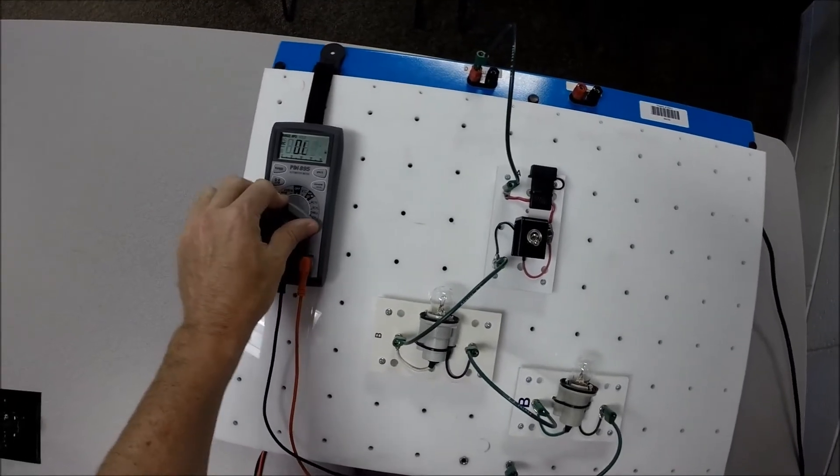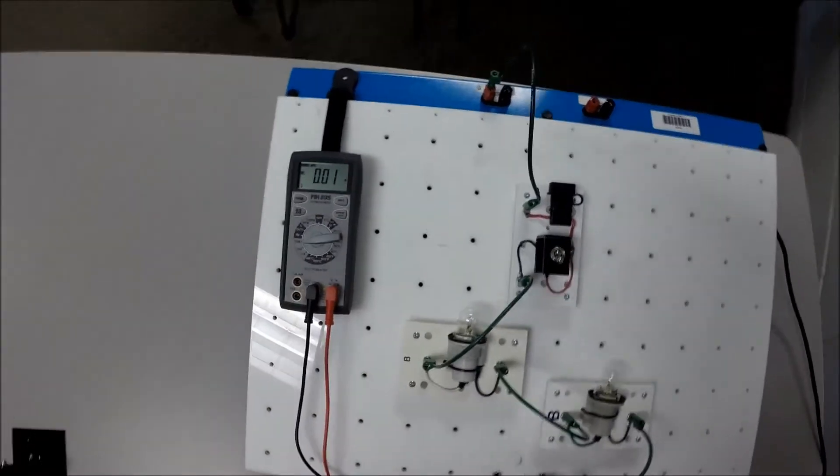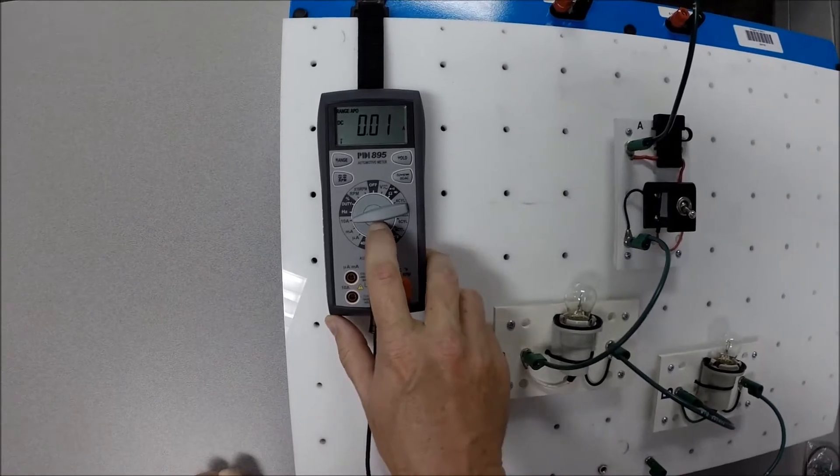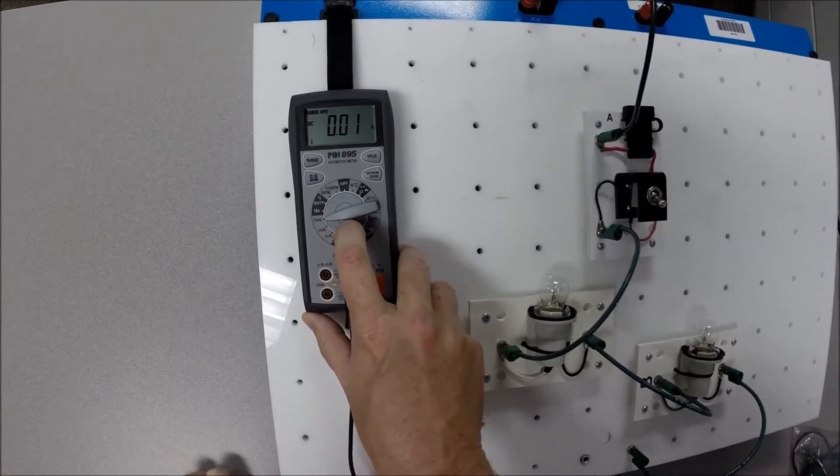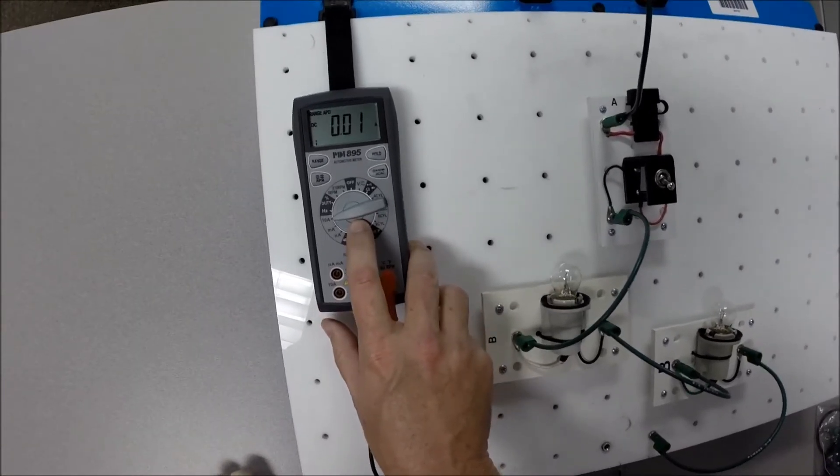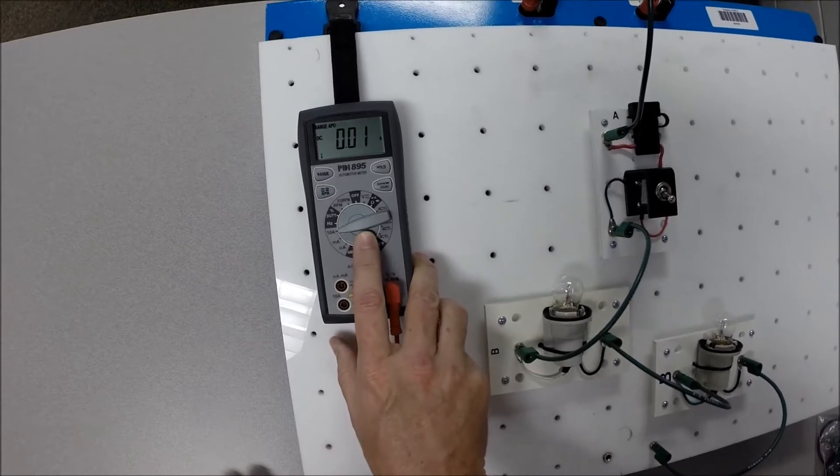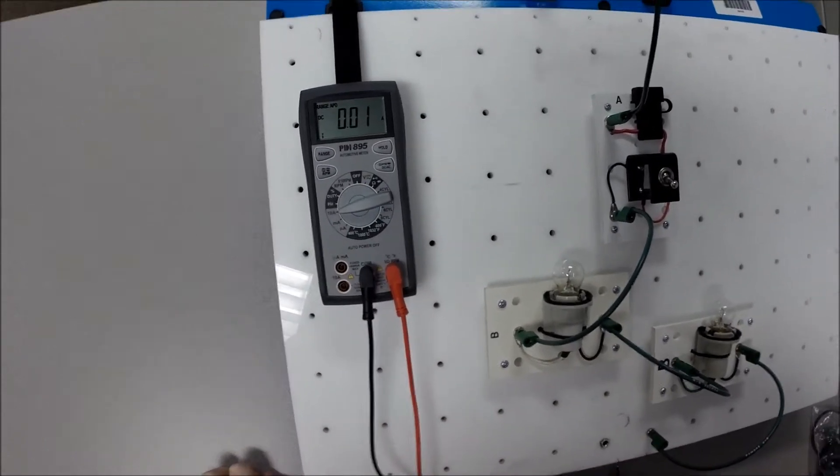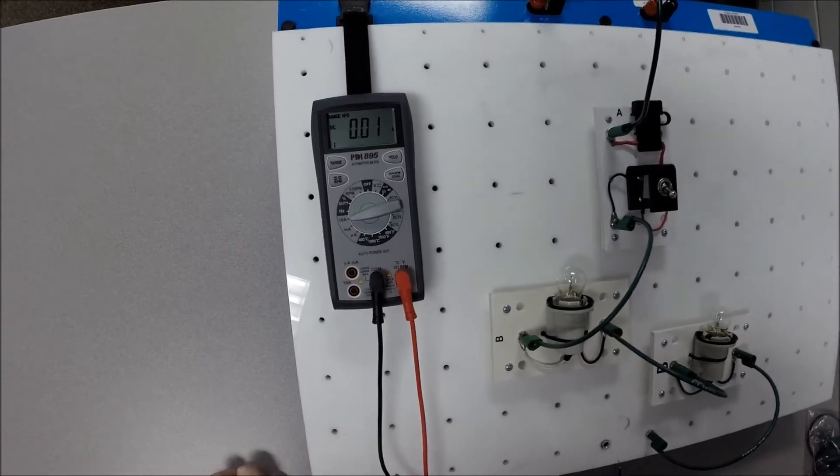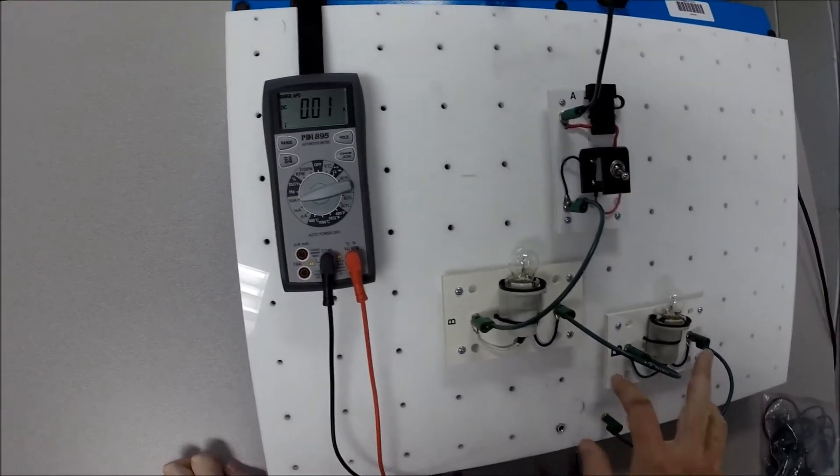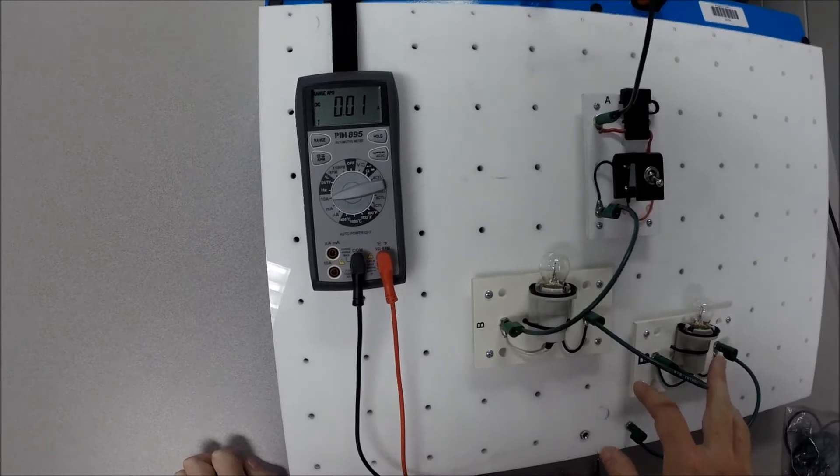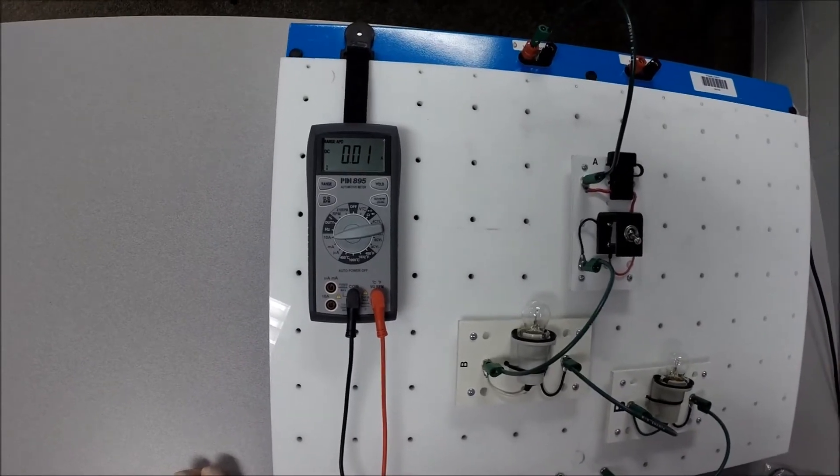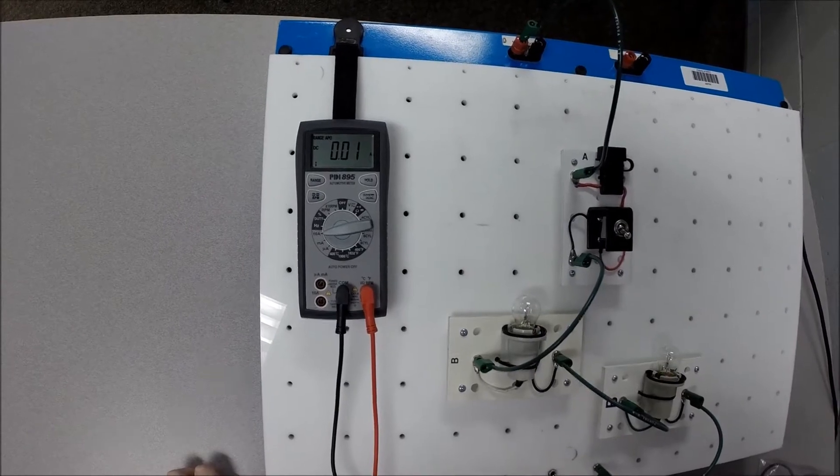We're going to turn the meter on, and we always start out on the 10 amp scale, because we don't know how much current is going to be flowing through this circuit. Now, there's two bulbs here, so chances are it's going to be a fair amount of current, meaning it'll probably be at least an amp or somewhere in that neighborhood. If we had these two bulbs hooked up in parallel, it would definitely be way more than one amp, and certainly over two amps.